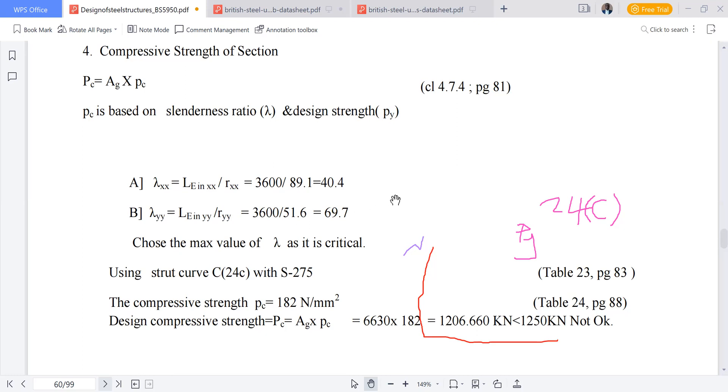The higher the lambda, the lesser the value of pc. For our case, the y-axis has the highest lambda, so we shall use lambda y-y or slenderness ratio in the y-axis. So we shall use lambda y-y from that Table 24c.